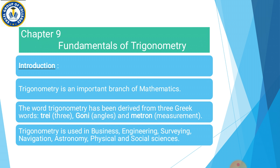We are going to start with the introduction. Trigonometry is an important branch of mathematics. The word trigonometry has been derived from three Greek words: 'tri', 'goni', and 'metron'. 'Tri' means three, 'goni' means angles, and 'metron' means measurement. Trigonometry basically teen Greek words se aaya hai.